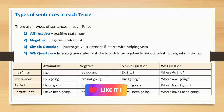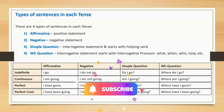Present perfect continuous affirmative: I have been going. Negative: I have not been going. Simple question: have I been going? WH question: where have I been going?